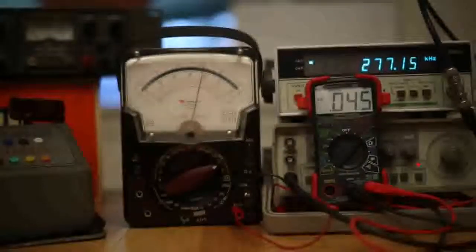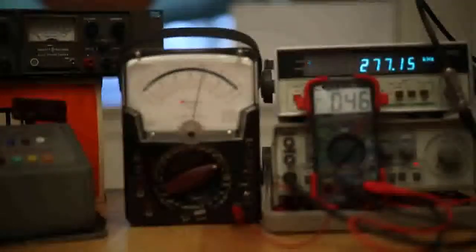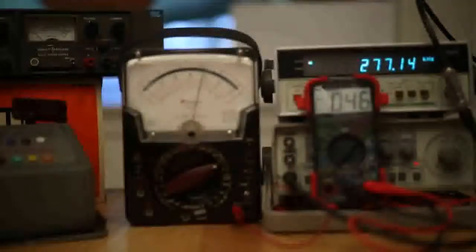This is a Triplet model 630NA multimeter. It's the oldest piece of equipment I have. It was probably made in the 1950s, 1960s.